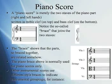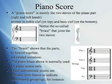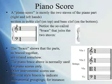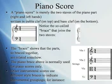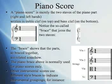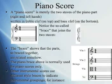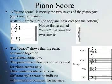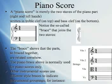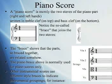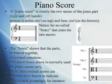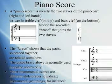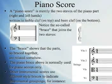The simplest and most common type is the piano score. There's lots and lots of piano music, and so there's lots of this type of score. The piano score is merely two staves of the piano part — right and left hands — written in treble clef on the top and bass clef on the bottom. Notice the so-called brace that joins the two staves. The brace shows that the parts braced together are related somehow. The piano brace is normally used for piano scores only.